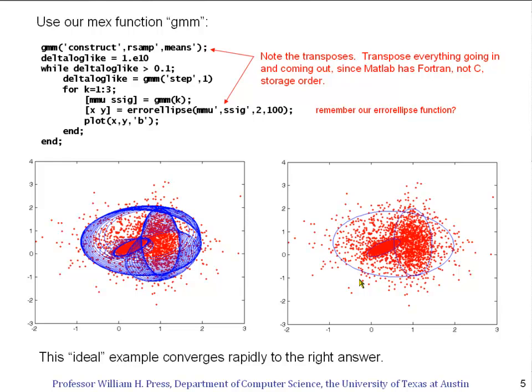You can see that in this ideal example we rapidly converge to the right answer, and in fact given enough data points, it would converge with arbitrary accuracy to those Gaussians because that really is the correct statistical model for which we're maximizing the likelihood.